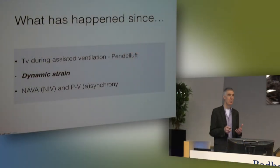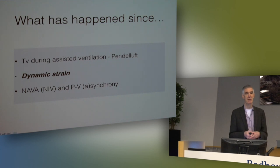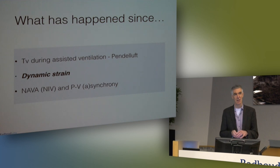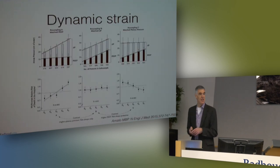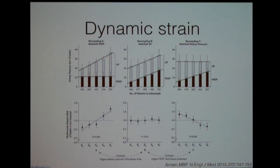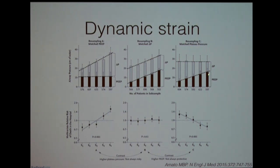The second thing we learned is the concept of dynamic strain. Many animal studies showed that dynamic strain may be one of the most important reasons for ventilator-induced lung injury. A recent study in the New England Journal — using driving pressure as a substitute for dynamic strain — showed that this may also be the case in humans. You can see identical PEEP levels with increasing driving pressure, and mortality actually increases in those cases. With static strain unchanged, if dynamic strain increases it may increase mortality; if static strain increases but dynamic strain is the same, there is no difference in mortality; and if static strain increases while dynamic strain decreases, you see a decrease in mortality. So a lot of evidence points to dynamic strain being one of the most important reasons for ventilator-induced injury.